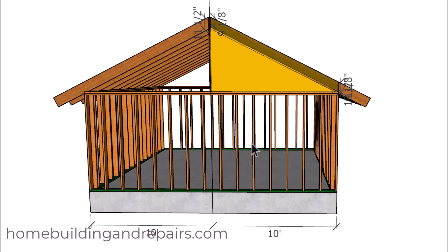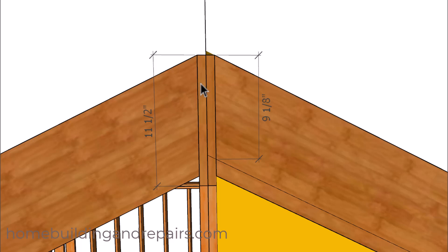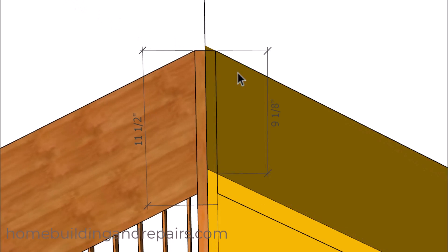We have a 6-and-12 roof pitch and a 20-foot wide building, so half of the span is going to be 10 feet. However, we're not going to use the full 10 feet — we're actually going to subtract half of the ridge width to make it easier. Otherwise we're going to have to calculate this angle here.